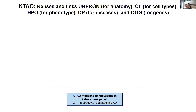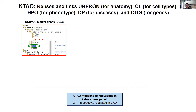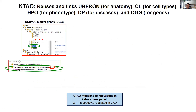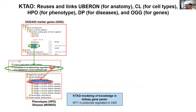For example, using the WT1 gene, we use the ontology of genes and genomes to represent the gene and protein. Using the new relation, this protein is susceptibly regulated in CKD. For CKD, we use HPO — the Human Phenotype Ontology — to represent the condition. For the cell, it is the podocyte.